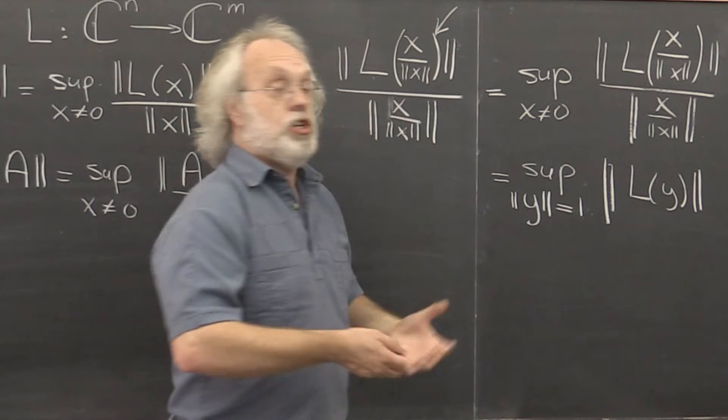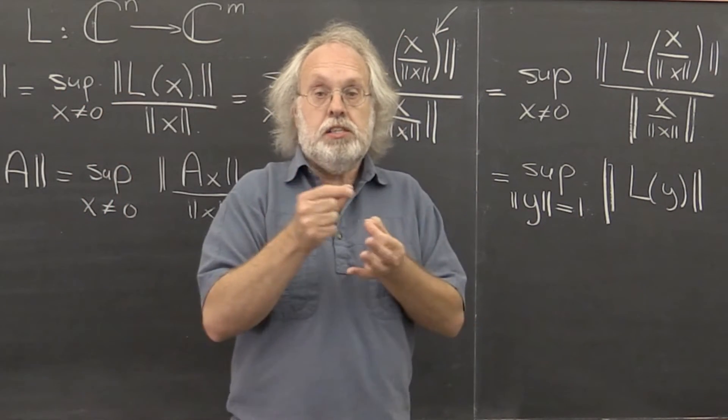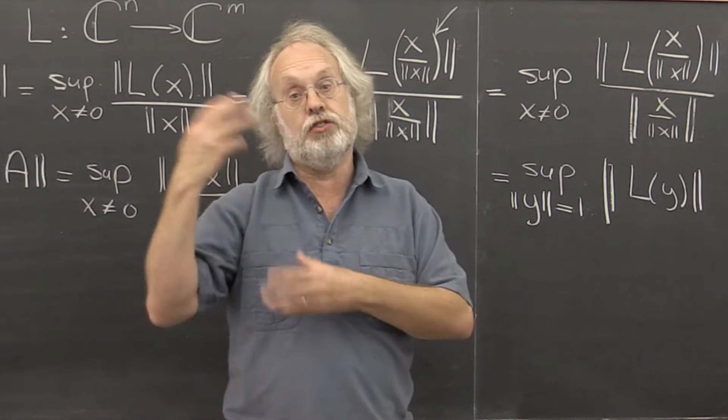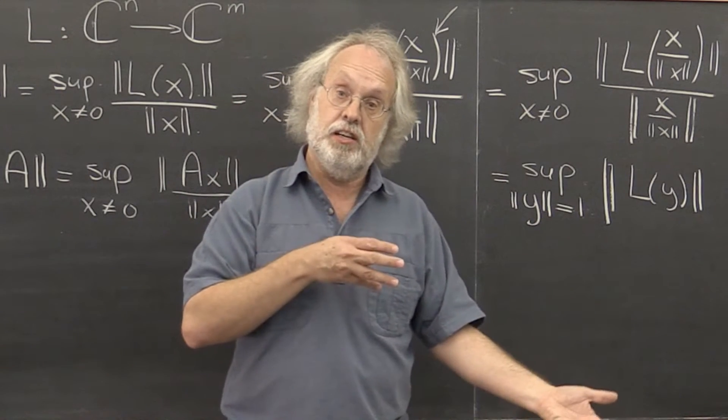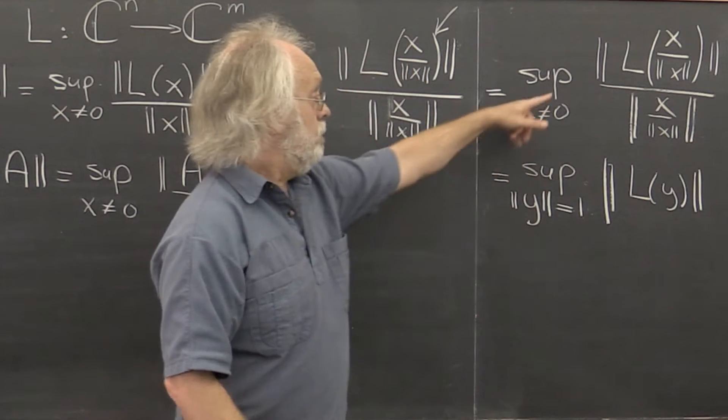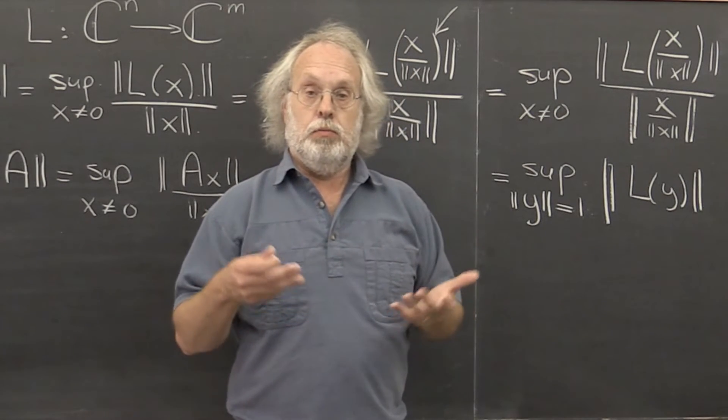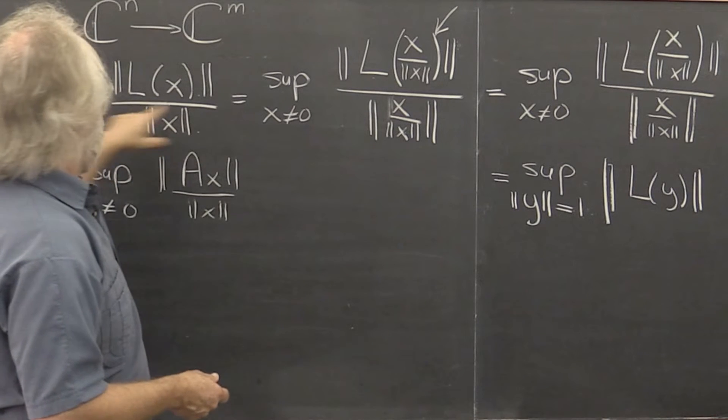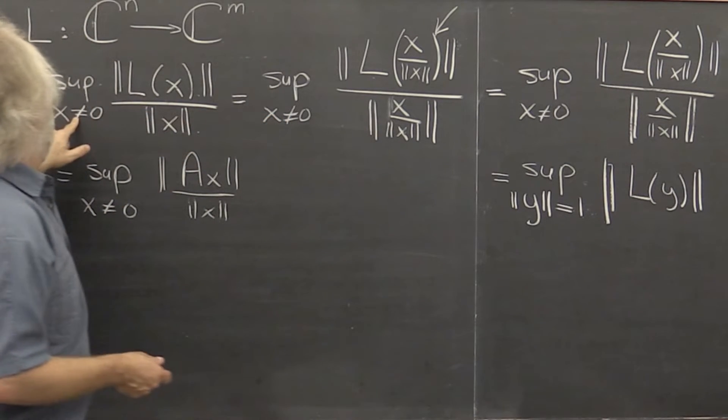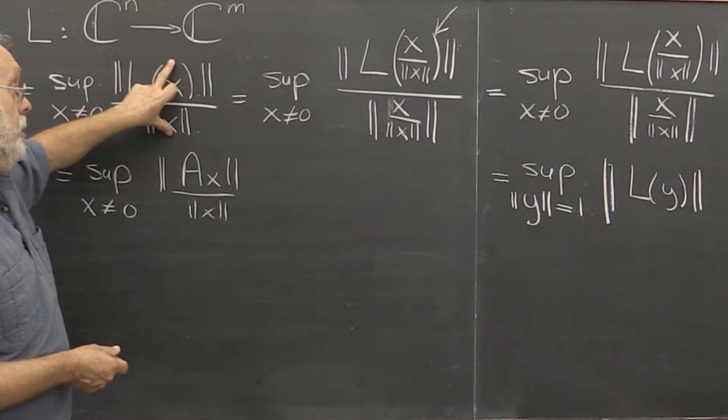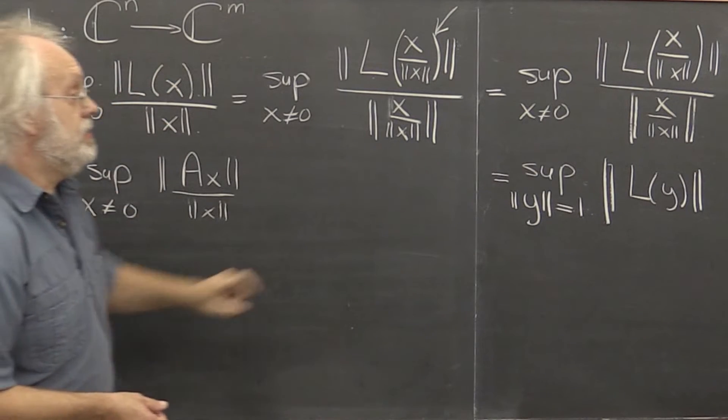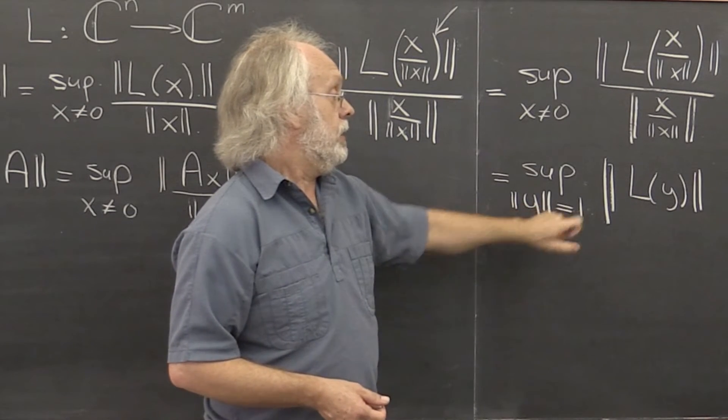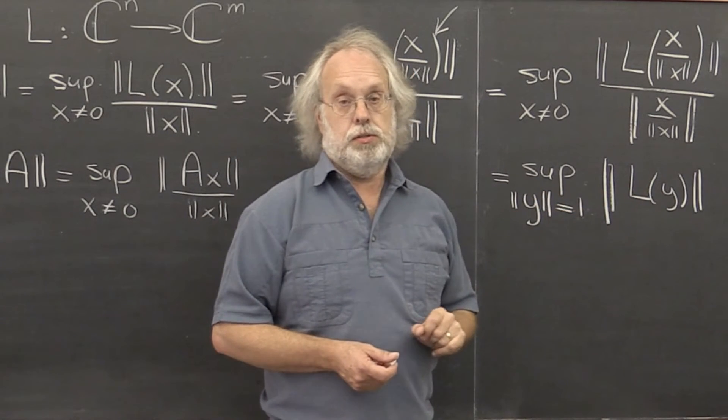So because linear transformations have the property that you can stretch the vector first and then transform, or you can transform the vector first and then stretch, and because norms are homogeneous, it's the case that the supremum over all vectors that are not the zero vector by how much that is stretched is the same as the supremum over all vectors of length 1 by how much those are stretched.